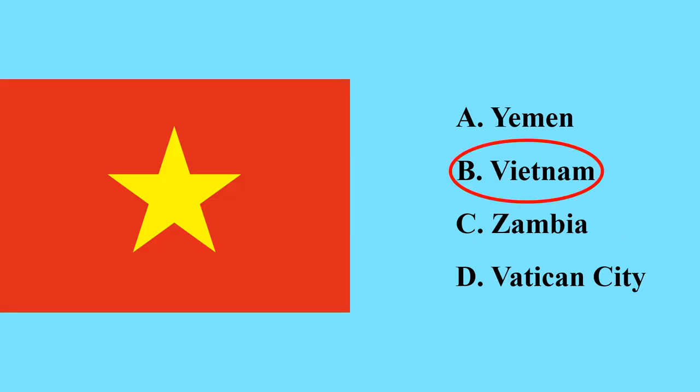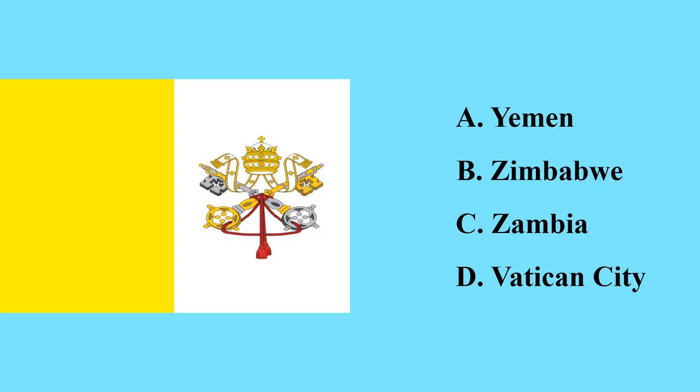This is the flag of Vietnam — Vietnam is a country in Asia which is the largest coffee producer in Asia. This is the flag of the smallest country in the world, which is called Vatican City.